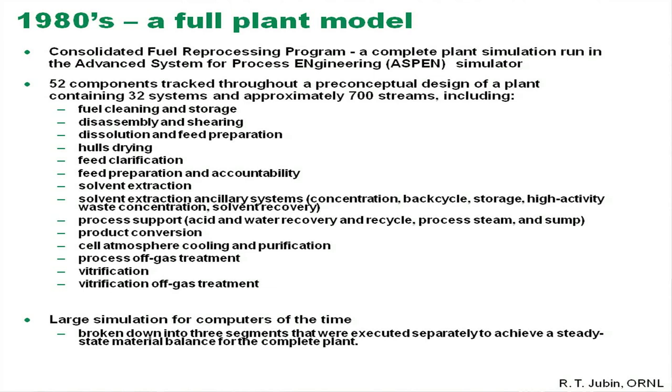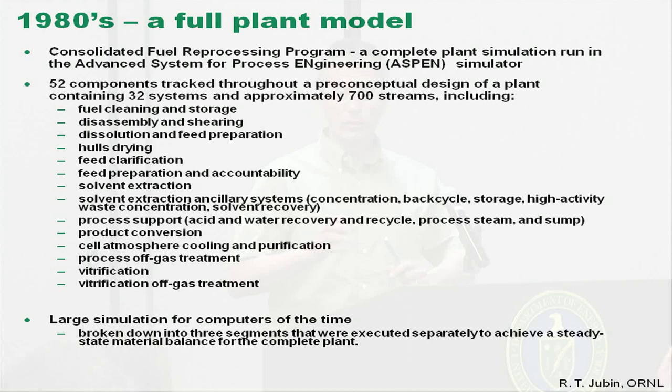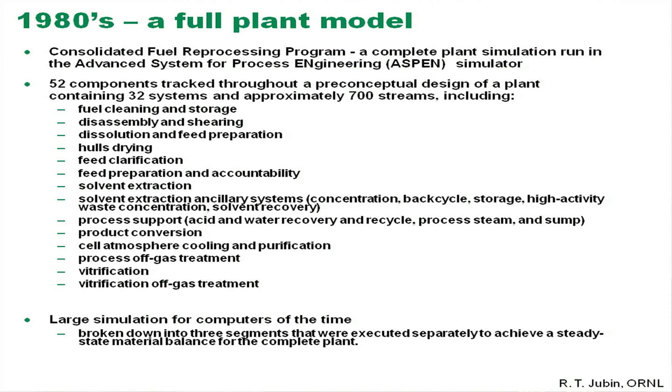Stepping up from a single extraction step to an entire plant: back in the 80s, Bob Jubin and colleagues completed a full plant simulation using Aspen — 700 streams, 32 different systems including all the systems in an aqueous recycling plant. This was a steady-state simulation, very large for computers at the time; they had to break the plant into several segments just to run it. But it was very useful for getting a conceptual design of a plant.